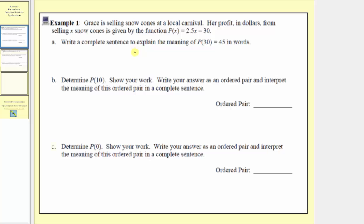For part a, we're asked to write a complete sentence to explain the meaning of p of 30 equals 45. When we're given p of 30 equals 45, we need to recognize that the input is 30 and the output is 45.